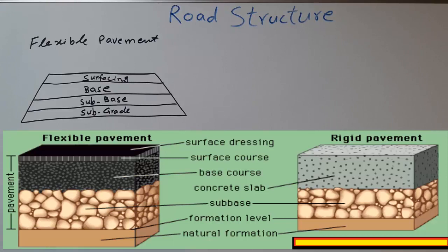The third one we have is the base course. The base layer is an important layer for the road structure. It normally bears the traffic load. This part of the road uses stone aggregate, and the thickness of the base is four to six inches.